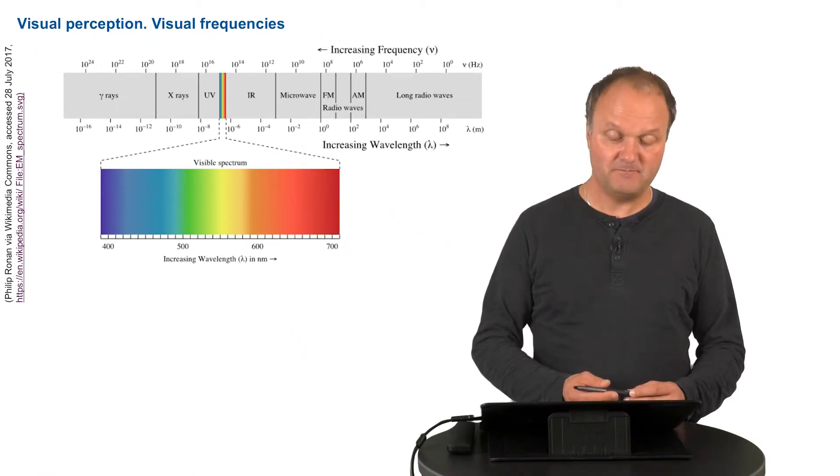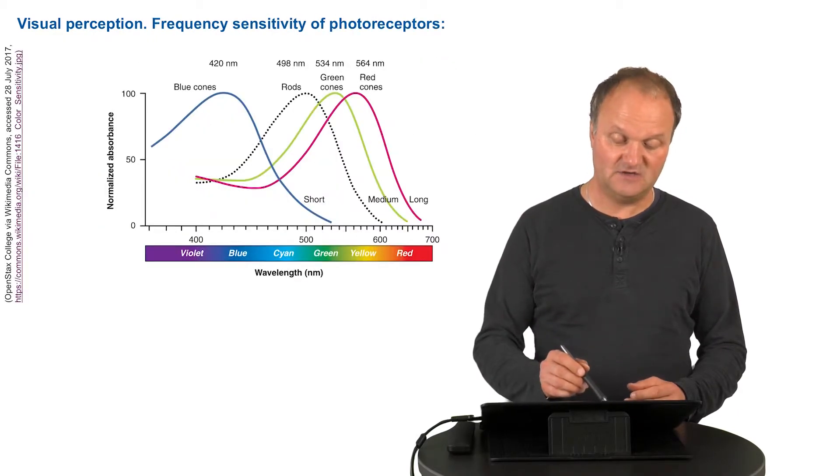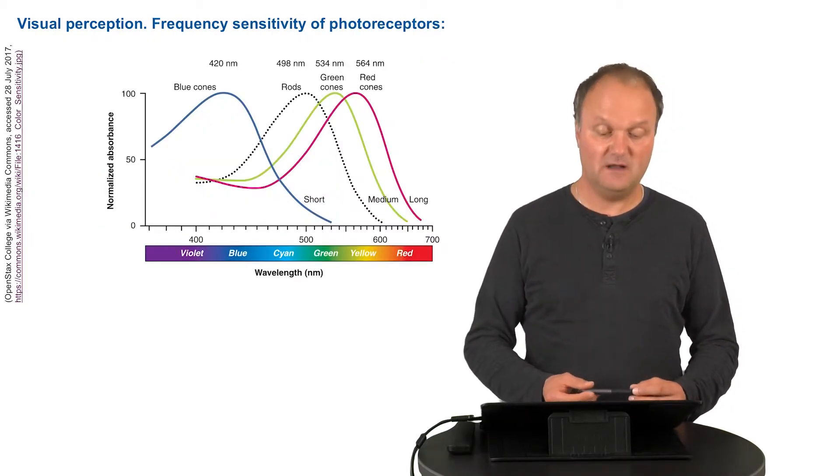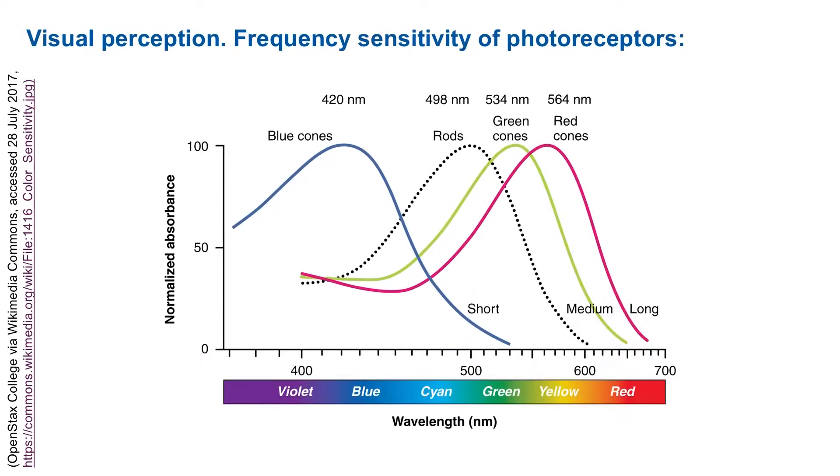Within this spectrum, the three types or the four types of receptors actually catch different parts of it. You can see here the sensitivity of the cones, distinguishing between blue cones, red cones, and green cones, and the sensitivity of the rods, and all of them have been normalized to the same sensitivity.